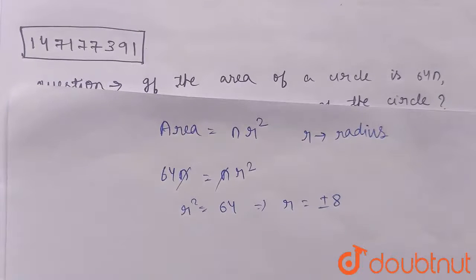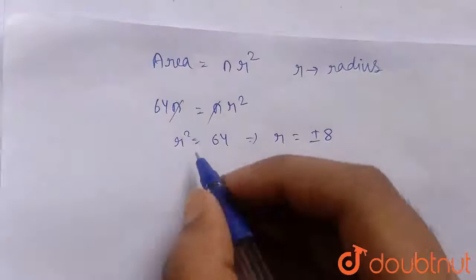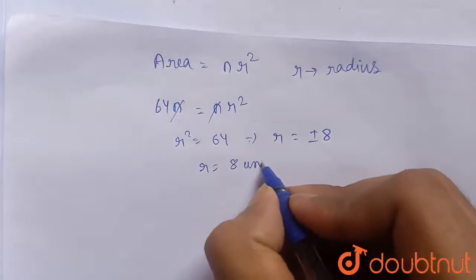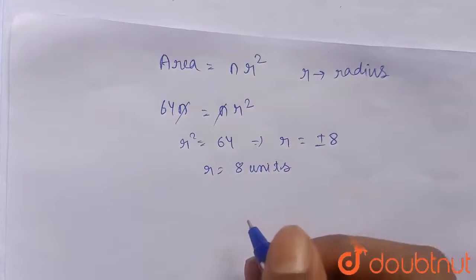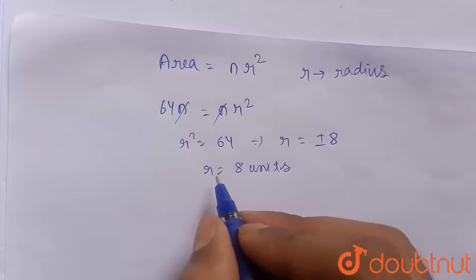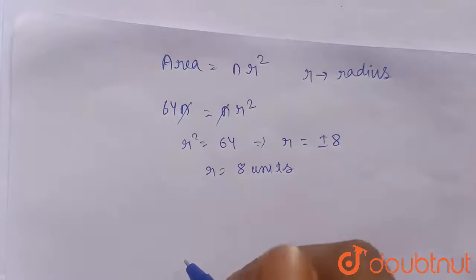Now, a circle with negative radius has no meaning in geometry, so we will only take the positive value. So r will be equal to 8 units. Now, using this r, you can easily find the circumference of the circle.